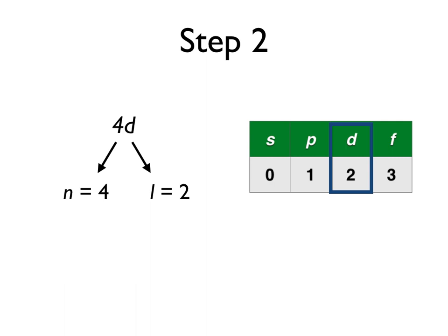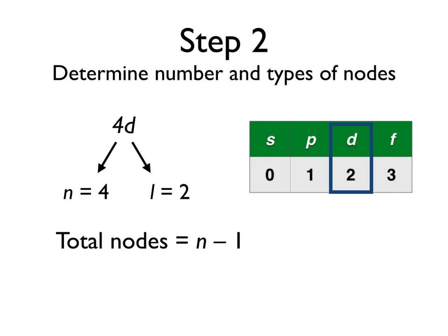With that information in mind, we can determine the number and types of nodes that will be featured in this orbital. The total number of nodes, as mentioned in the text, is n minus 1. Since n here is 4, the total number of nodes will be 3.